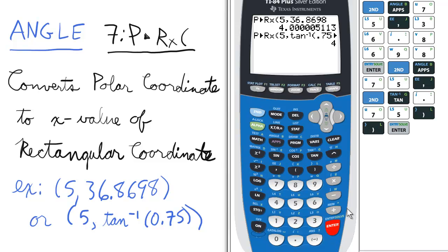This means the input that we gave, which is 5 as the radius and the inverse tan of 0.75 as the theta angle, would yield us 4 as an x value in rectangular coordinate form.